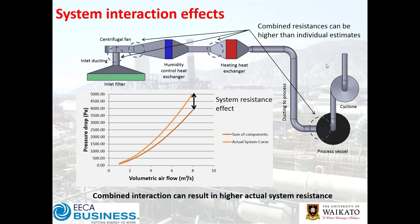The answer is what we refer to as a system resistance effect. This acknowledges that between each of those components we've got additional losses not fully captured individually — losses around the fan inlet ducting, at the fan outlet, transitions in the duct beyond what we'd anticipate, and inlet and exit effects of process vessels and cyclones. These sum up to additional pressure drop, and when you measure individual components you don't necessarily capture all of these additional losses.